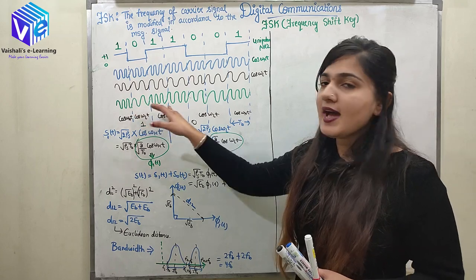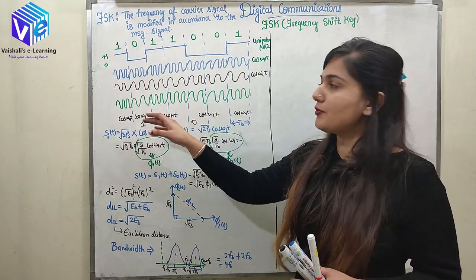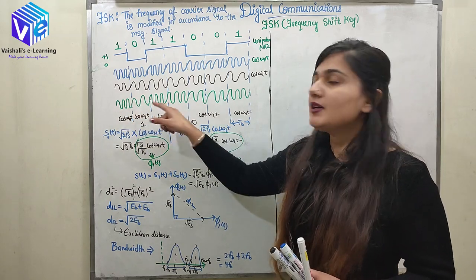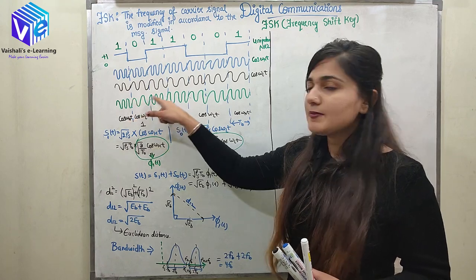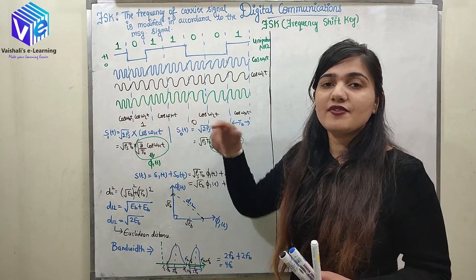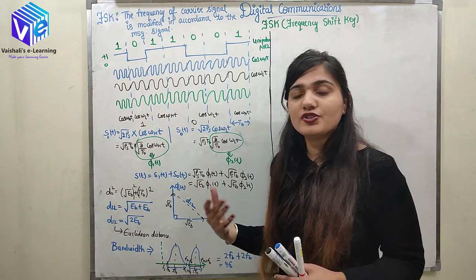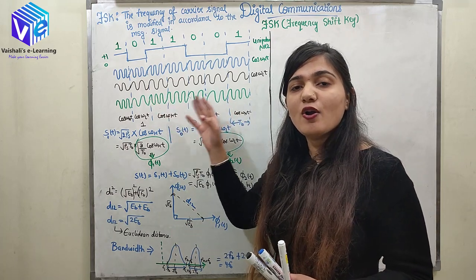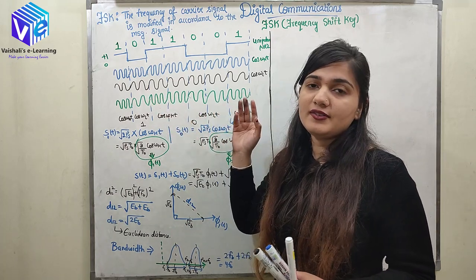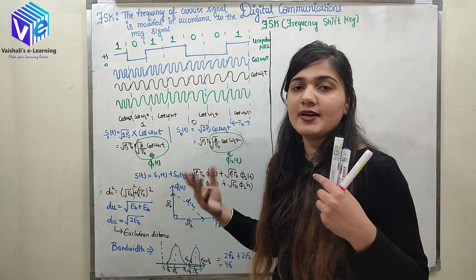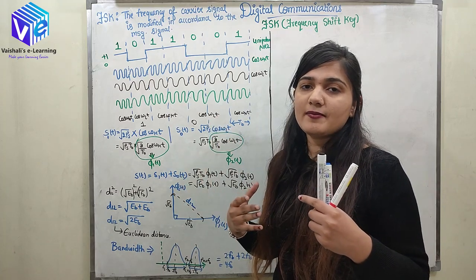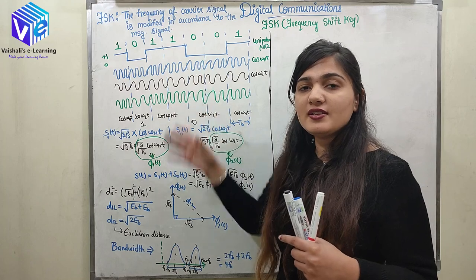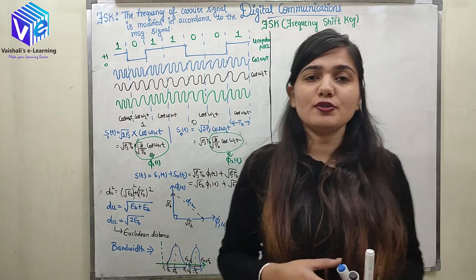In FSK there is no DC component, so every time there is a signal. In ASK, 0 was represented by the 0 level, so a long stream of 0s would be represented by a long 0 signal, causing the receiver to misinterpret that no signal is coming. To avoid all these problems, FSK is preferred. Now coming to the block diagram of the FSK transmitter.